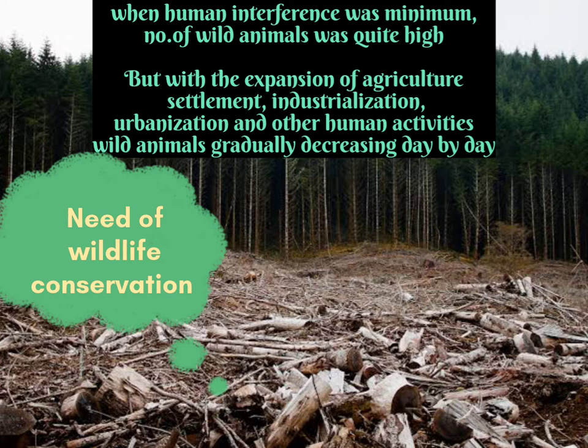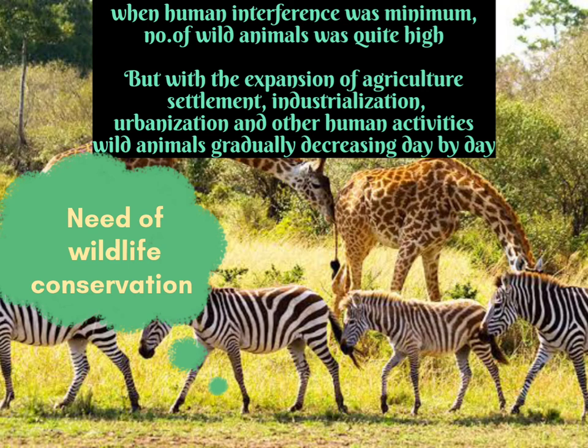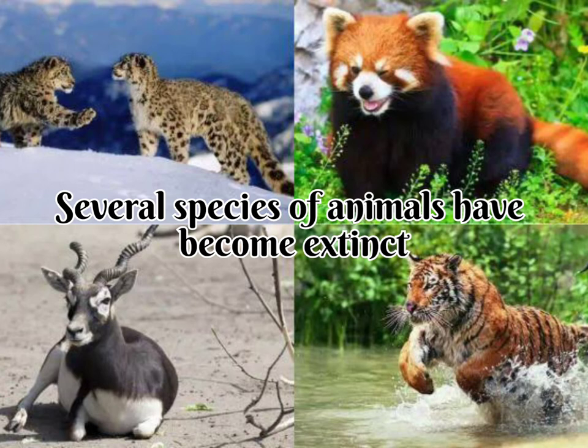But with the expansion of agriculture, settlement, and industrialization, and cutting of trees for our purposes — deforestation and other development activities — the population of wildlife and wild animals has been gradually decreasing. As a result, several species of animals have become extinct.